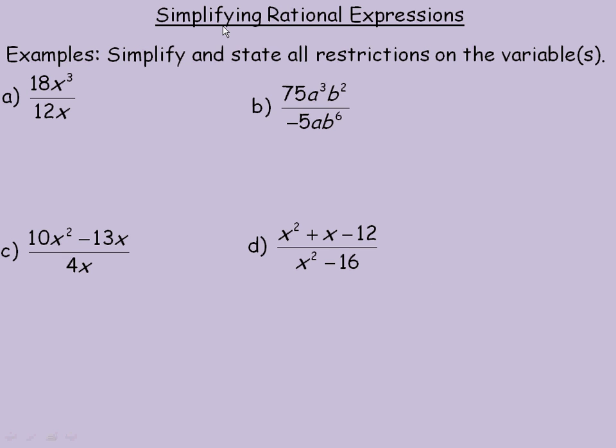In this lesson we'll take a look at simplifying rational expressions. Rational expressions are basically a polynomial divided by another polynomial, like a rational number. Like two thirds is the ratio of two to three, it's two over three, it's an integer over another integer.